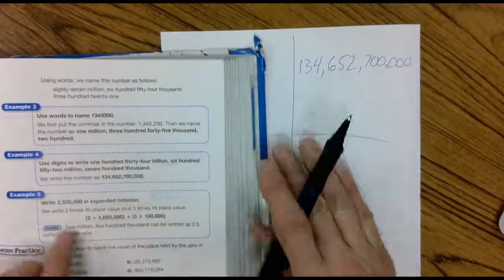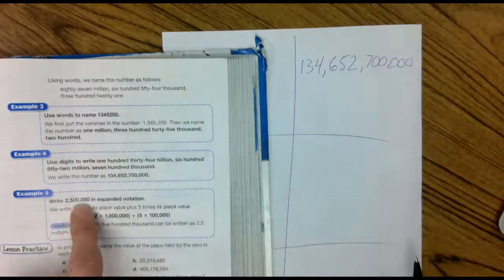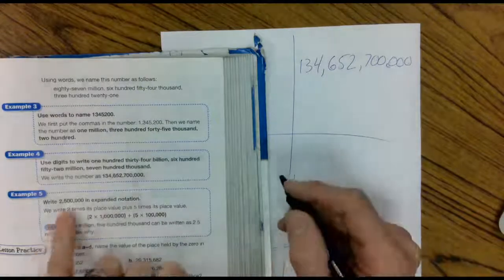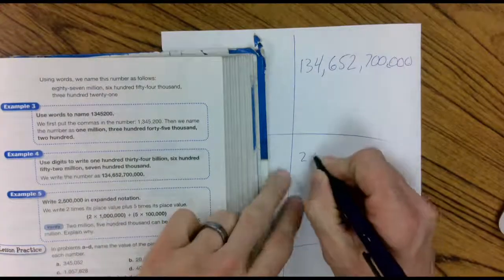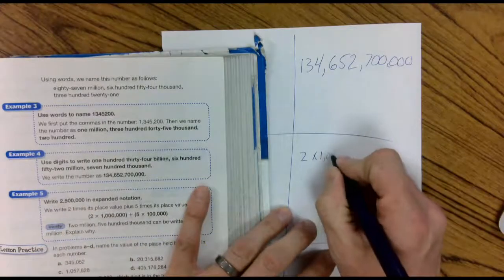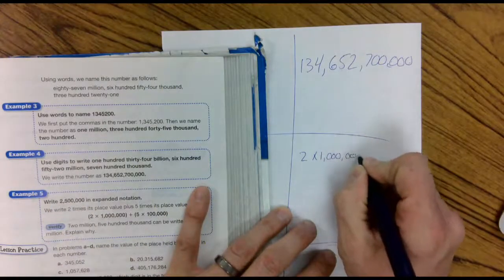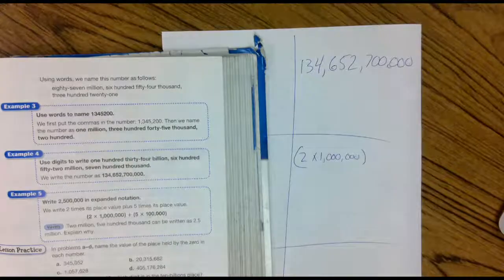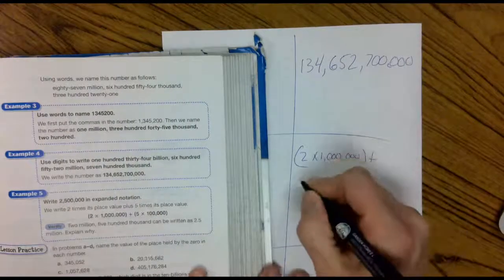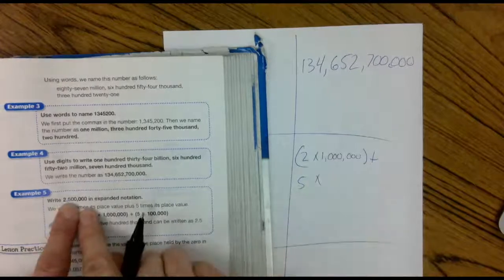Example number five. Write it in expanded notation. You know what I'm going to say? I'm going to say face times place. Your first face is two times. It's in the millionth place, so you're going to have six zeros. One, two, three, four, five, six.